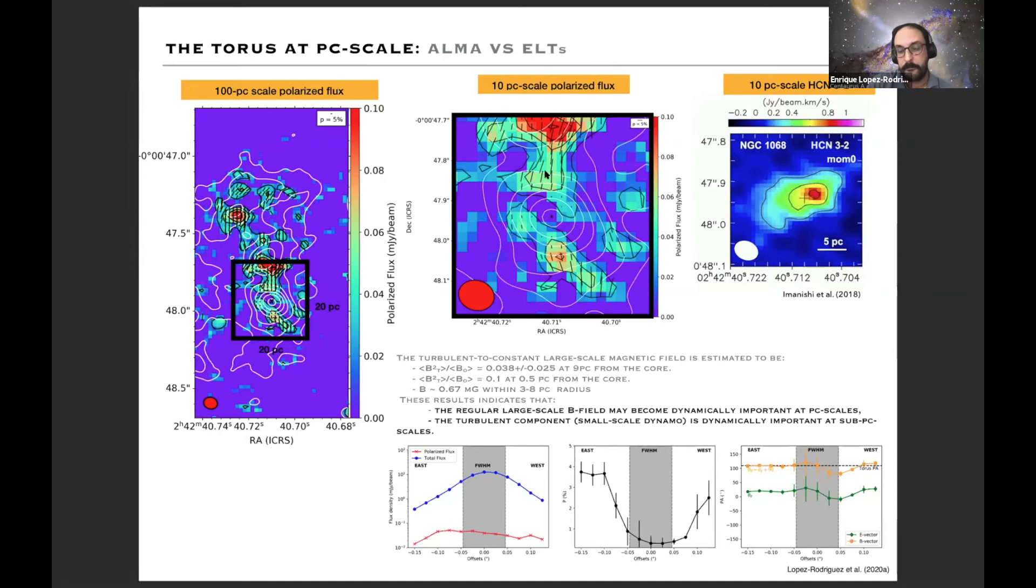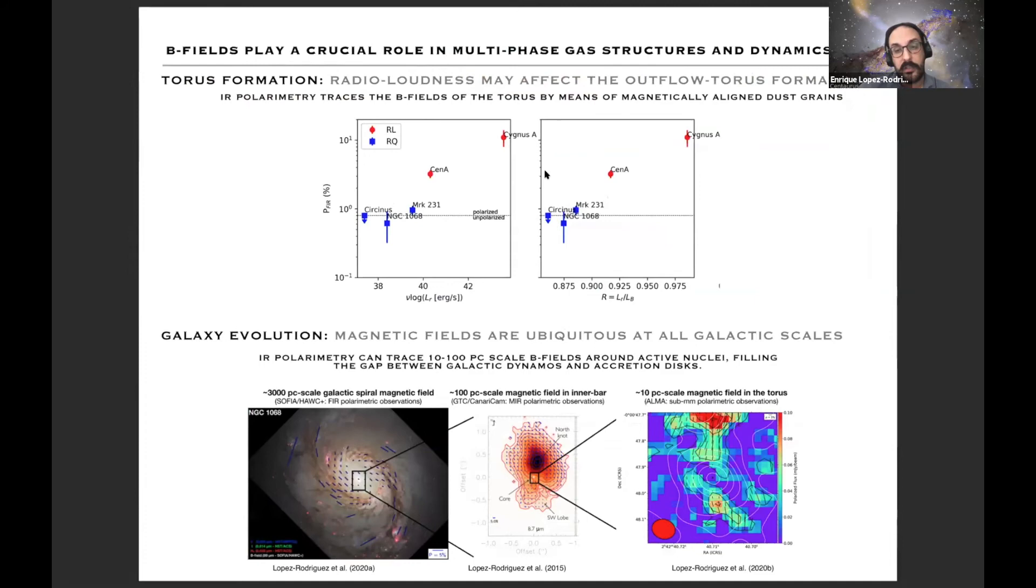I can finish by saying that 10 micron polarization with ELT may give a lot of new insights in terms of the MHD driving model and where we can compare actually the degree of polarization or polarization flux as a function of radio loudness. It may give us interesting information about the formation of jets, evolution of the torus itself, and also just say that magnetic fields are ubiquitous at all scales in galaxies, as you have seen from 3 kiloparsec all the way to 10 parsec scales.